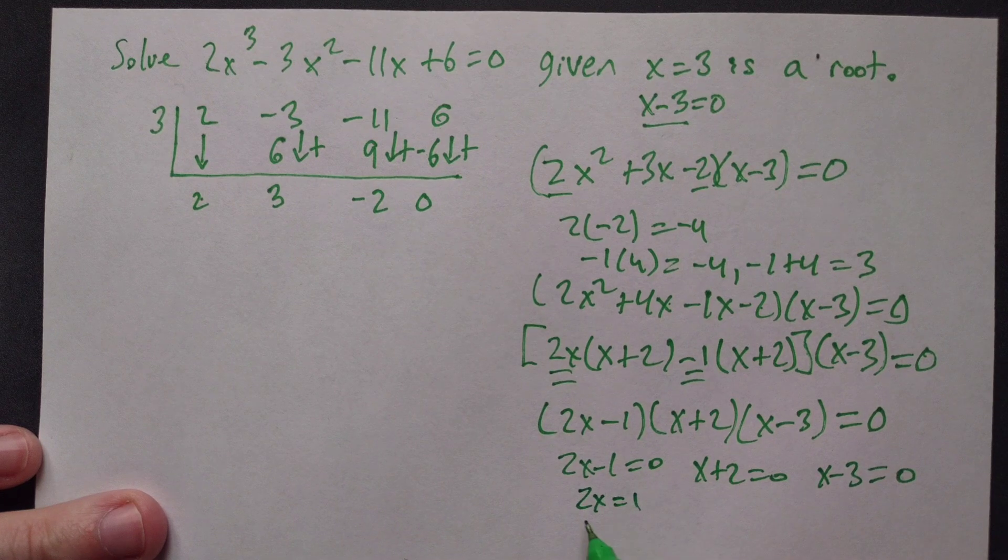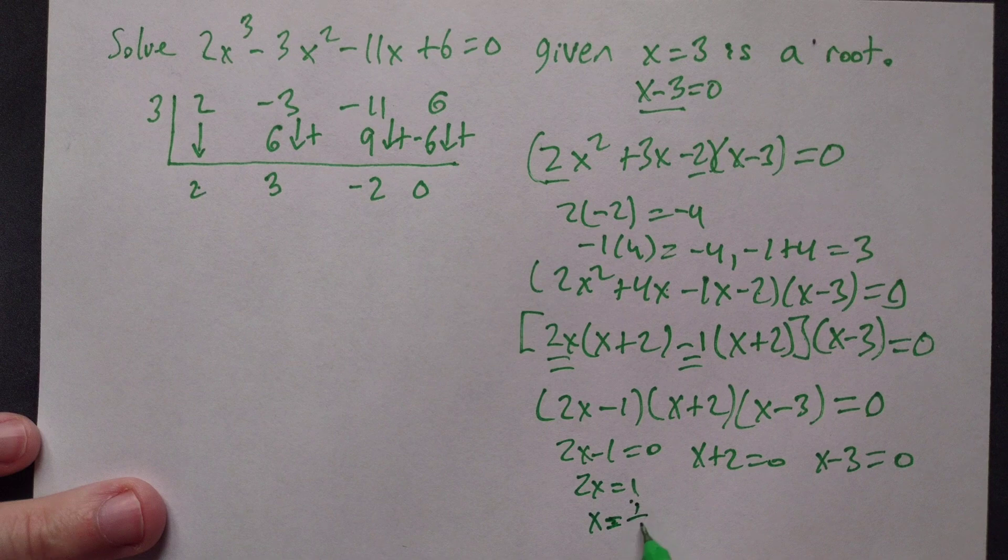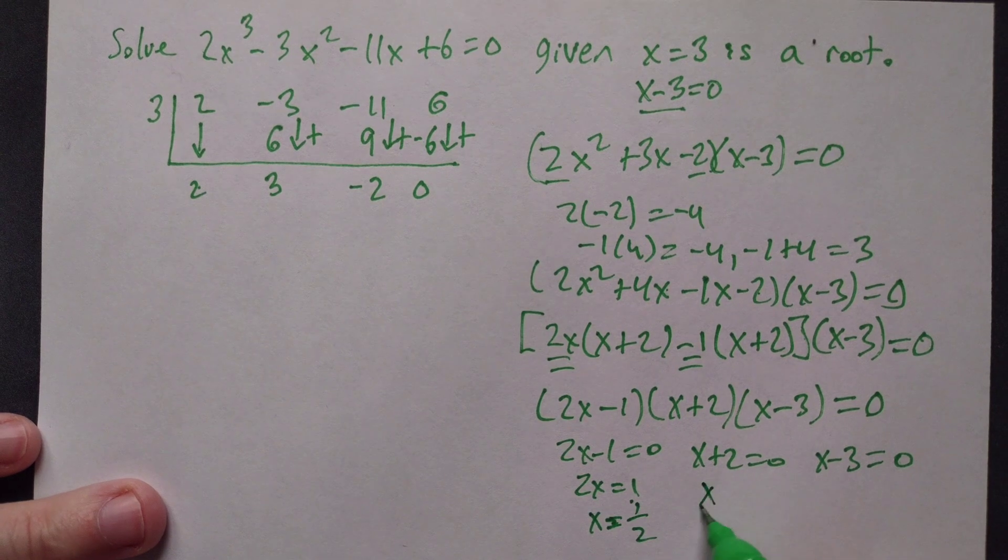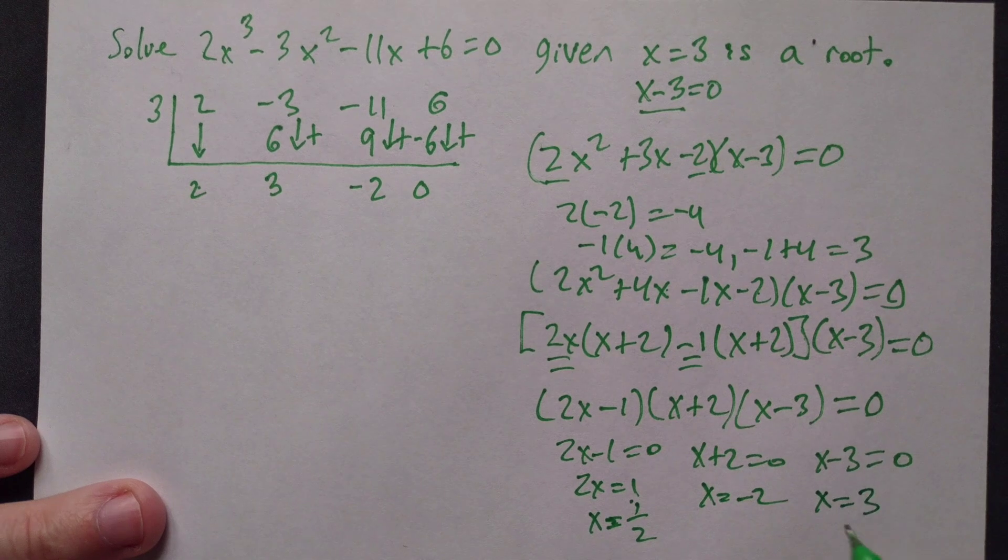From 2x - 1 = 0: add 1 to get 2x = 1, then divide by 2 to get x = 1/2. From x + 2 = 0: subtract 2 to get x = -2. From x - 3 = 0: add 3 to get x = 3.